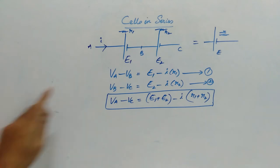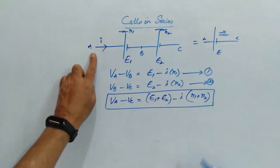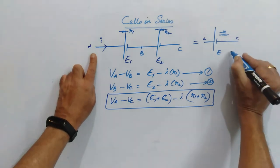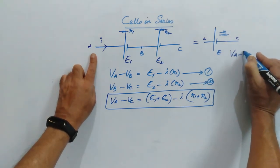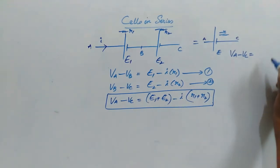So here this A is the first point and C is the last point. So from this I can write VA minus VC is equal to E minus I R.